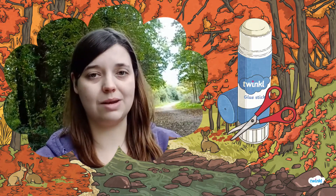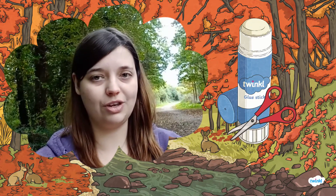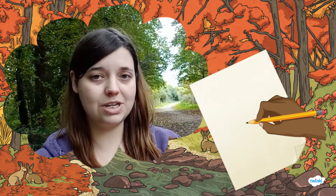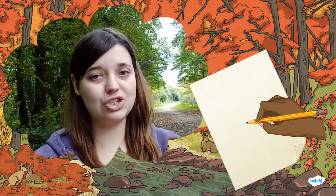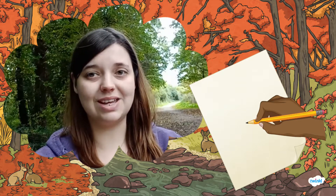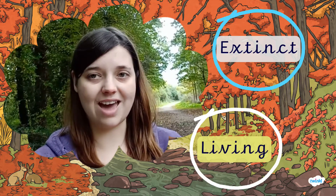You could get them to cut and stick the animals or draw pictures in the correct column if you need to simplify. If you don't have a printer at home, just use some plain paper and draw the animals into two groups: living and extinct.